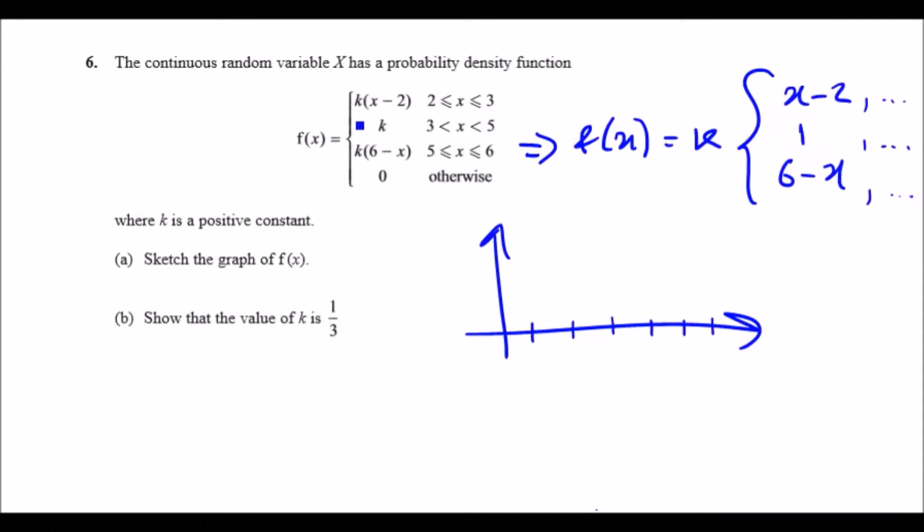We want x minus 2, so let's label this out. We want firstly from 2 to 3. When x equals 2, we get 0, so it should be on the line. When we get x equals 3, it should be 3 take away 2, which is 1. Technically it will be up here at 1 times k, which is k. This is a straight line connecting.